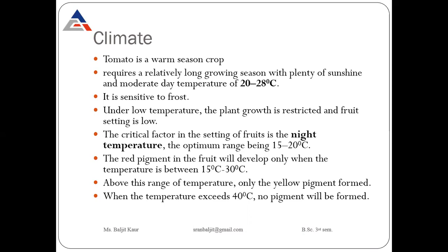Now the climate. Tomato requires a long growing season with plenty of sunshine and moderate day temperature. The optimum temperature for cultivation of tomato is 20 to 28 degrees Celsius. Tomato is very sensitive to frost, so we have to protect the seedlings from frost.